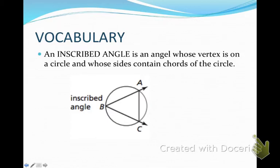Inscribed angles are angles whose vertex, so in this case vertex B, is on a circle and whose sides, in this case AB and AC, contain chords of the circle. So angle ABC is our inscribed angle here.